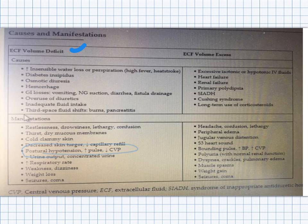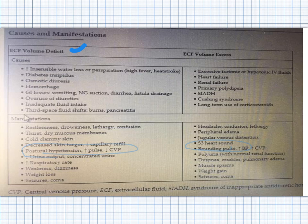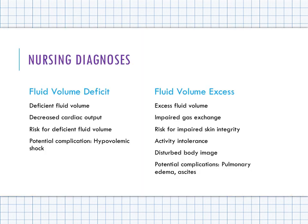With fluid volume excess, you still see neurological signs and symptoms: headache, confusion, lethargy, seizures, and coma. Cardiac signs include jugular venous distension (JVD), an S3 heart sound — an extra heart sound indicating fluid volume excess — polyuria, and weight gain.